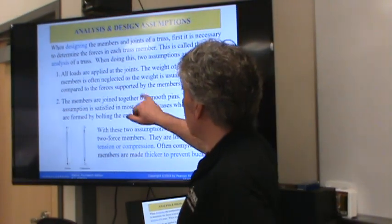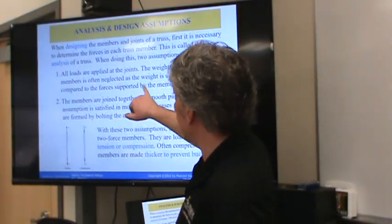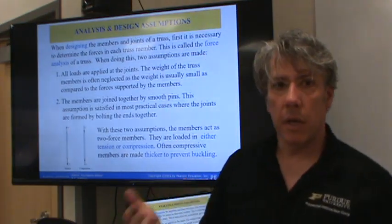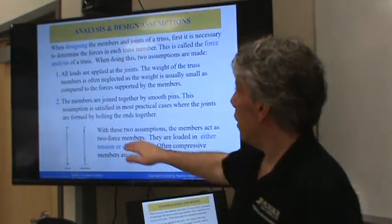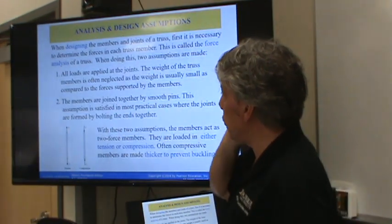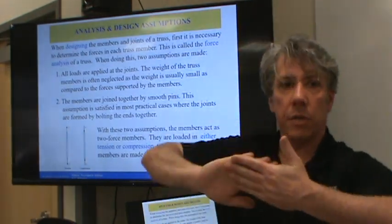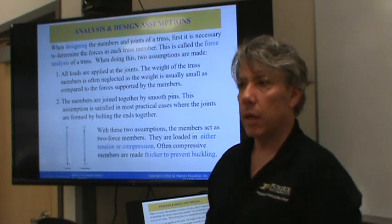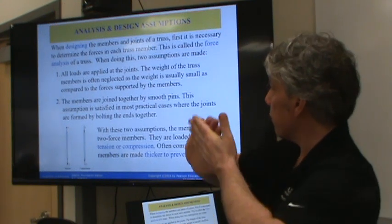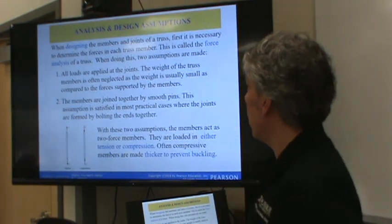Of course, suspension bridges are a little bit different, right? So the new bridge across 65 doesn't follow this. But these are, we're talking about truss bridges, okay? All right. So loads are applied at joints. The weight of the truss members are often neglected as it's usually small by comparison of the force that the members support, okay? The members are joined together by smooth pins. What that means is that there's not going to be any torque at the pins. There's nothing to consider there, okay? The pins allow free rotation at the joints, okay?